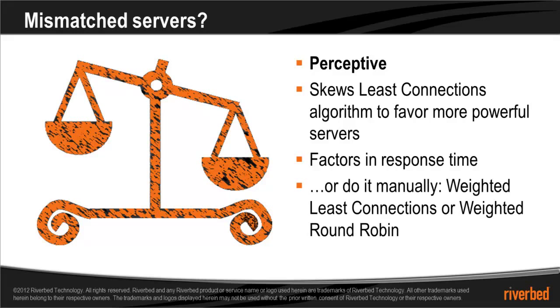Or you can do it manually by using weighted least connections or weighted round robin. In these algorithms, you assign a weight to the servers. The larger the weight, the greater the share of traffic the server will receive.